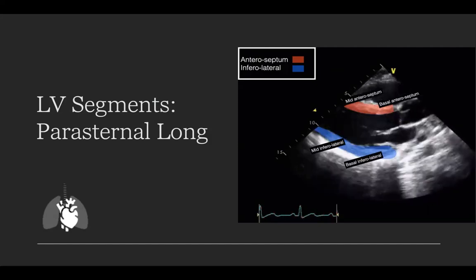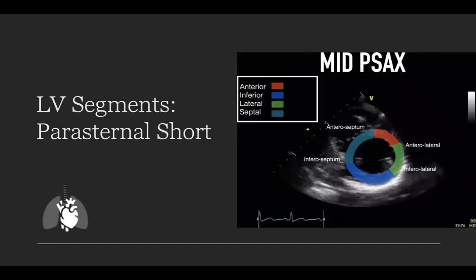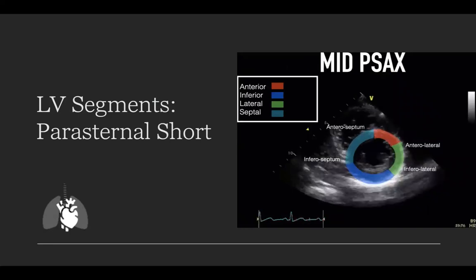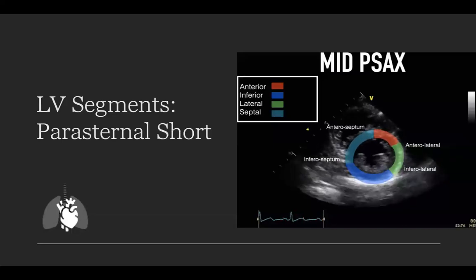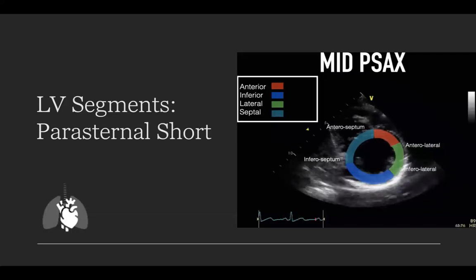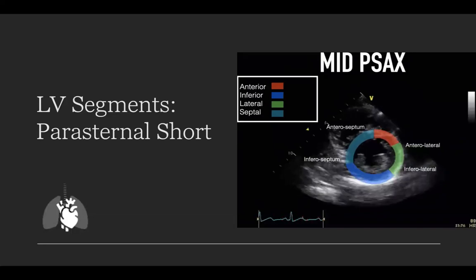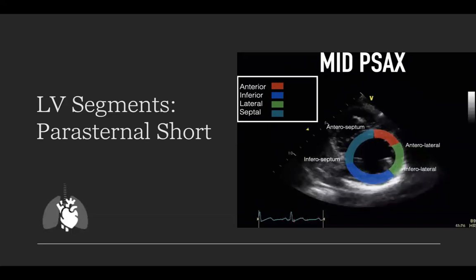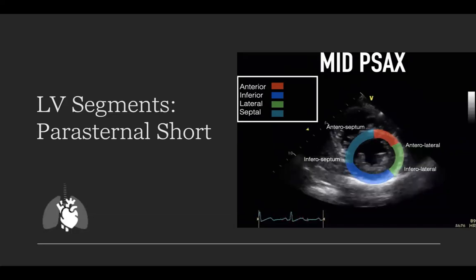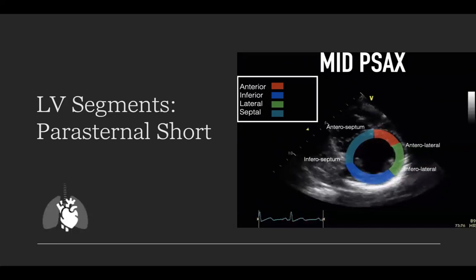Dr. Buchanan from Alberta has helpfully labeled the respective images in the following slides. In the parasternal short axis view, you can see all six segments: the anterior marked in red, the inferior in blue, the lateral in green, and the septum in darker green. The lateral and septal can be further broken down into anterolateral or inferolateral. This gives a helpful bird's-eye view of all six segments, though you need to ensure you're at the appropriate axis, as you can easily shift from mid to basal or apical if the left ventricle isn't perfectly circular.